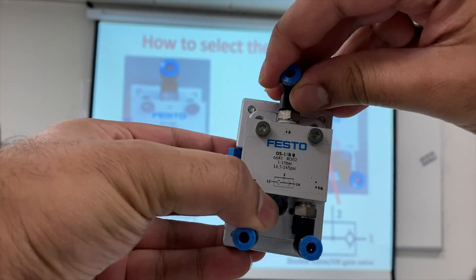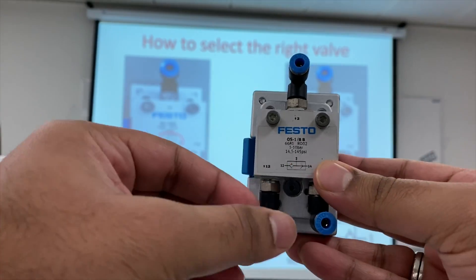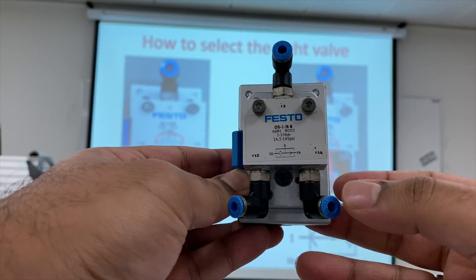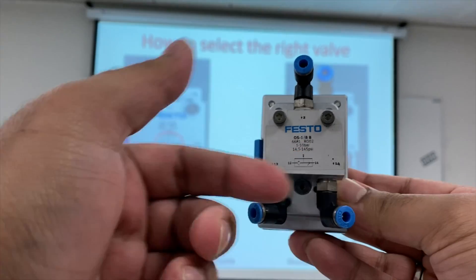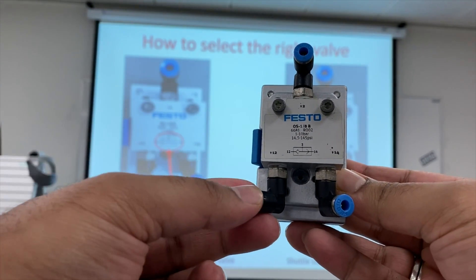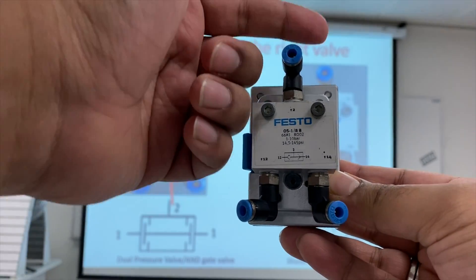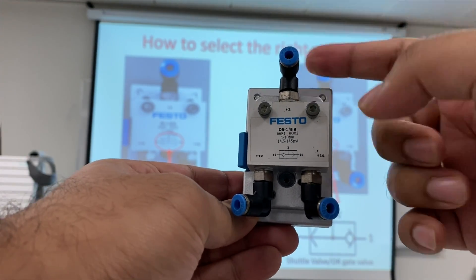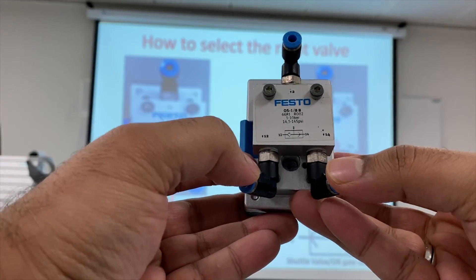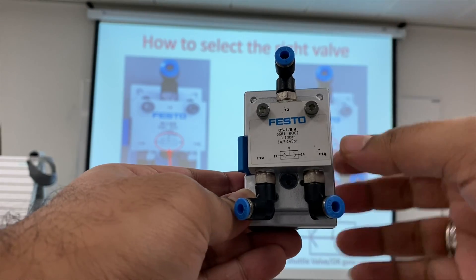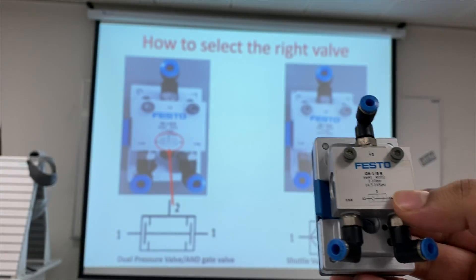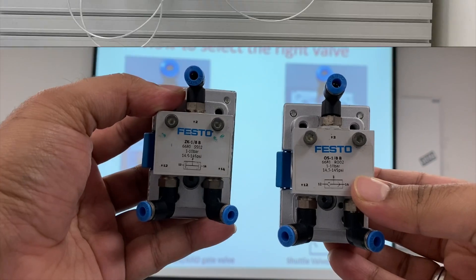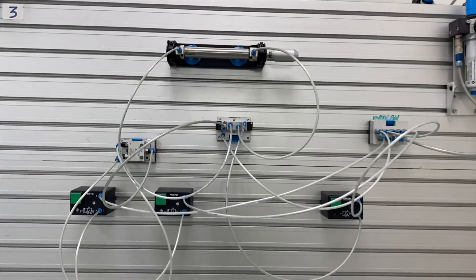For the shuttle valve, we again have the left side and right side feeding into port two. If air comes in from the left side, port two will be activated. If it comes in from the right side, port two will be activated. If it comes in from both directions, port two will also be activated. That's the difference between the AND gate and the OR gate.